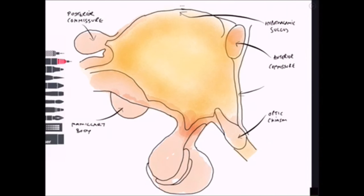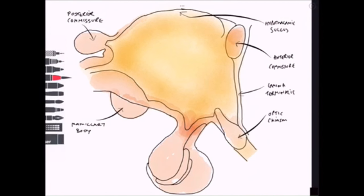A structure not often talked about — and you probably won't need to remember it — is the lamina terminalis, which forms the anterior border of the hypothalamus. It extends between the anterior commissure and the optic chiasm.